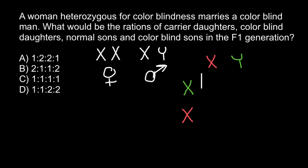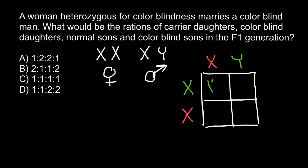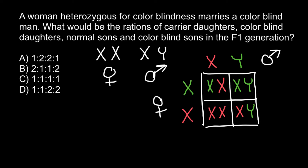When we build a simple Punnett square, we can predict the outcome of such a cross in the progeny. On the female side we have a normal X chromosome and a defective X chromosome. On the male side we have a normal X chromosome and a normal Y chromosome. As you can see, 50% of the progeny will be female and 50% will be male.